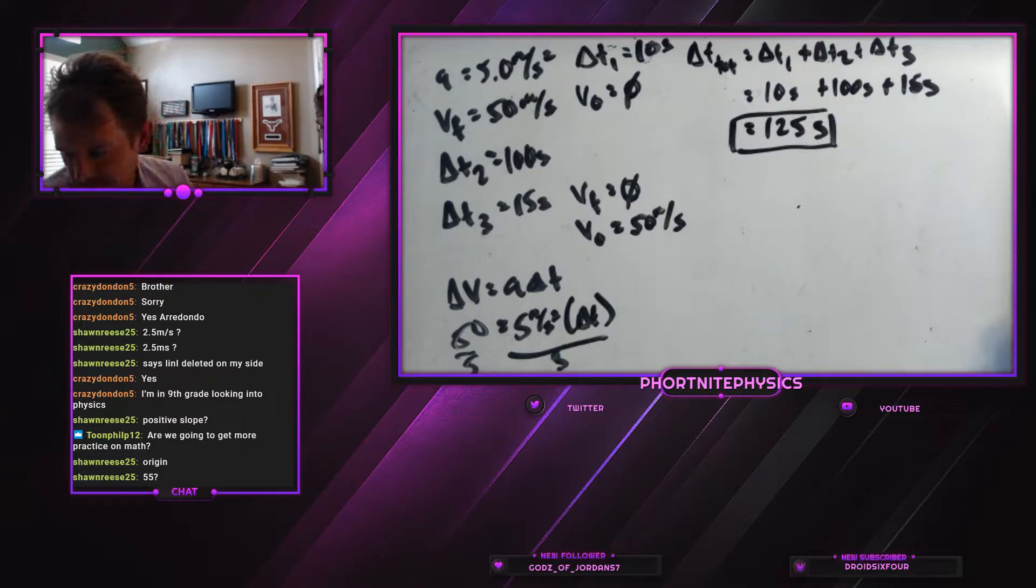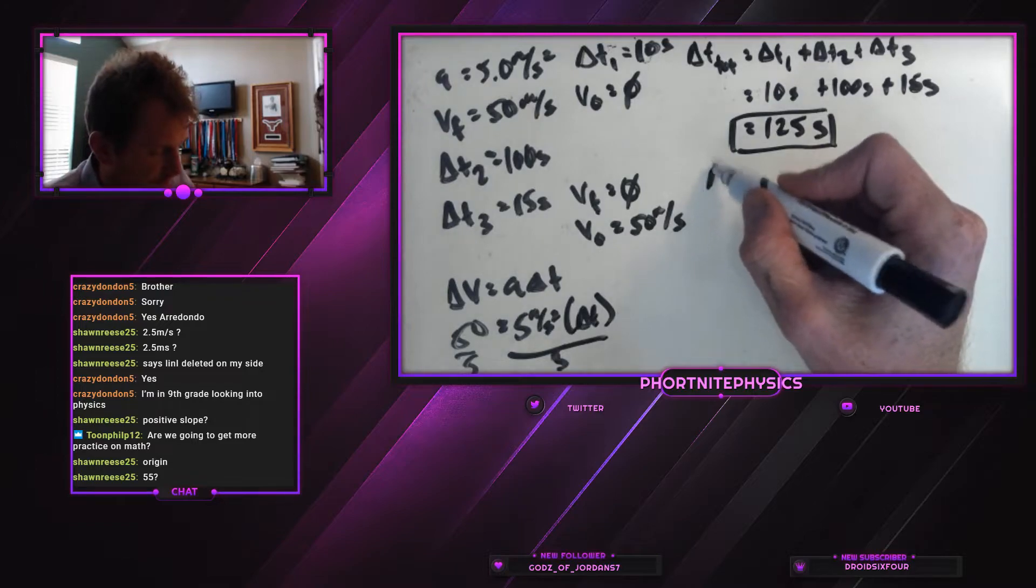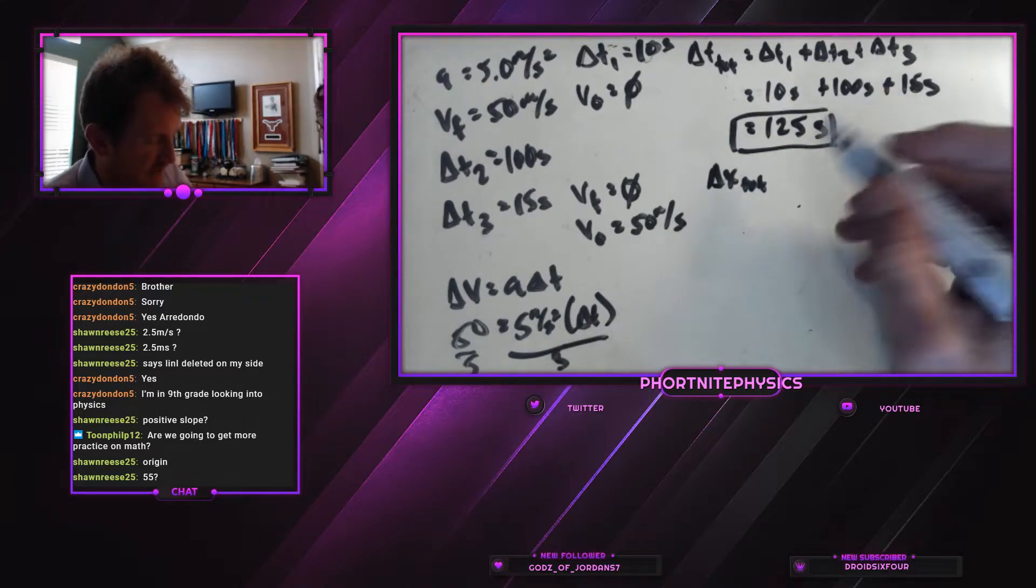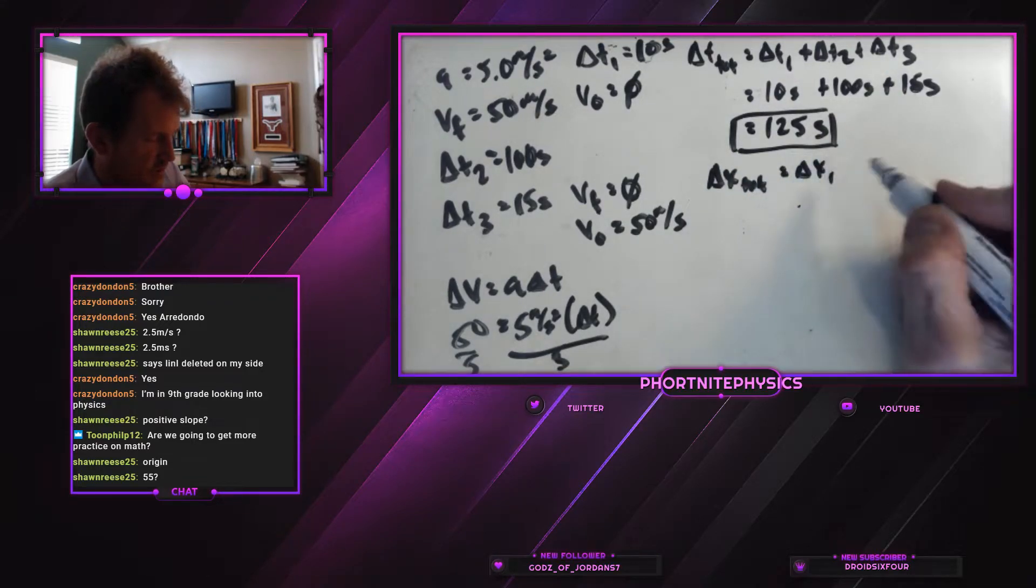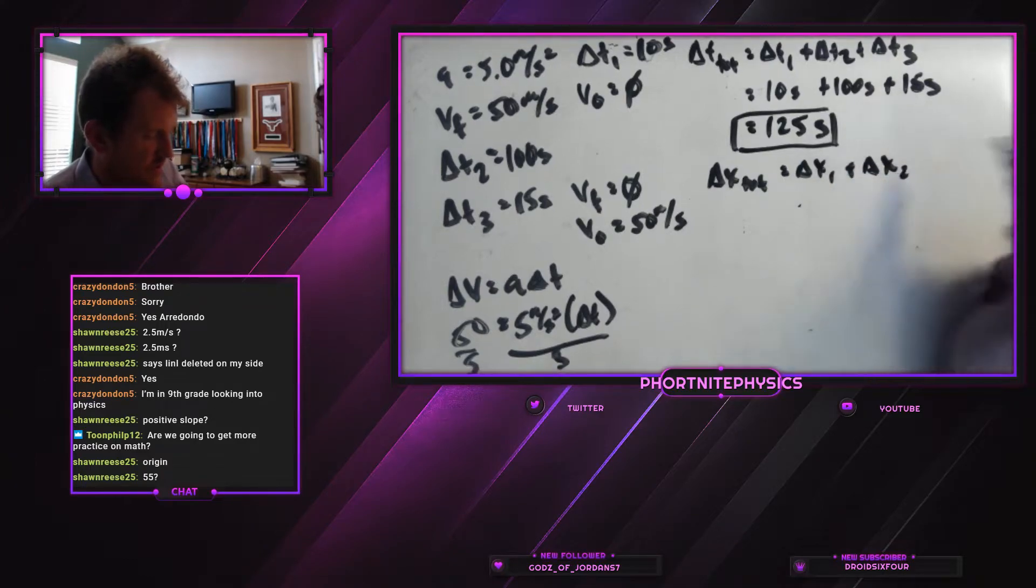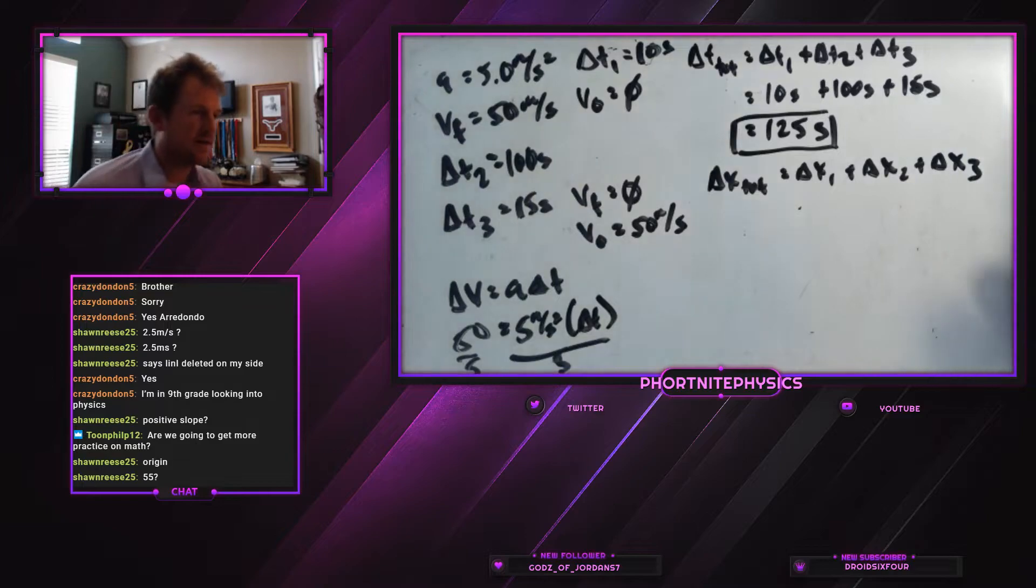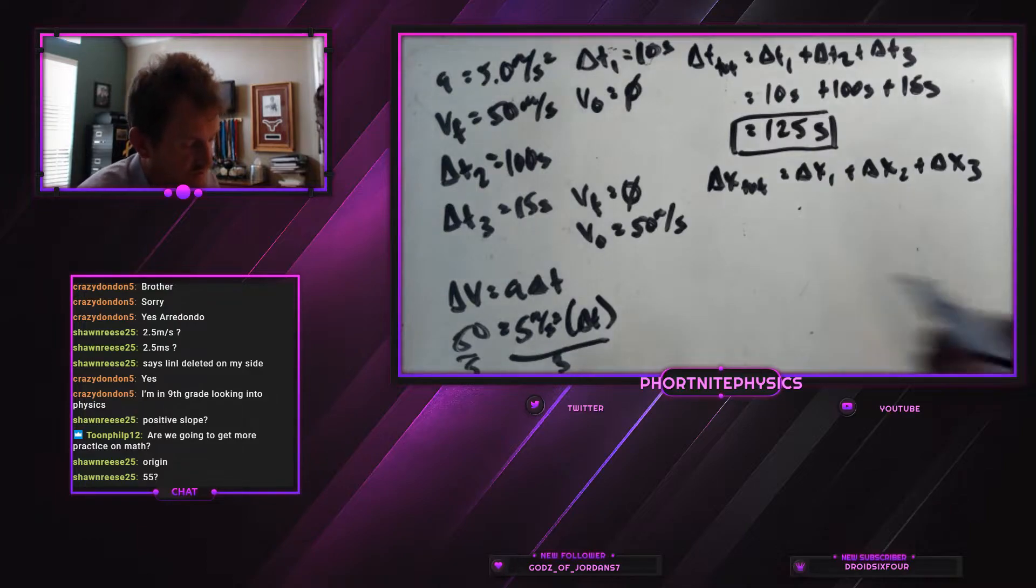So 125 seconds. Now, what is the total displacement of the truck? Our total x is again going to be x1 plus x2 plus x3. Now, how do I know that? It's just the total is we add up everything. That's it. That's all there is to it.